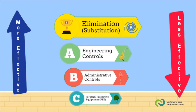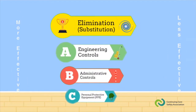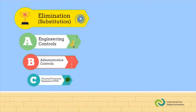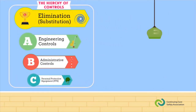To explain this better, let's apply the Hierarchy of Controls to an actual hazard. Imagine there is a giant overhead lamp in the lobby, and the rope holding it up is starting to fray.